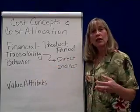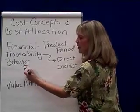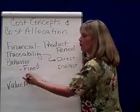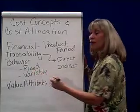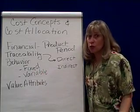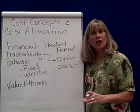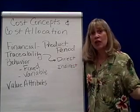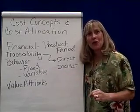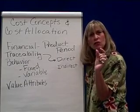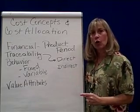The second way we can categorize costs is by their behavior. Costs are either fixed — they don't change depending on how many products you produce or sell — or they're variable. Variable cost means the more units you produce, the more your costs are going to be. Fixed costs are things like depreciation and rent; they don't change regardless of how many products or services you produce. Variable costs are fixed per unit, but the more units you produce, the more your total variable costs are.